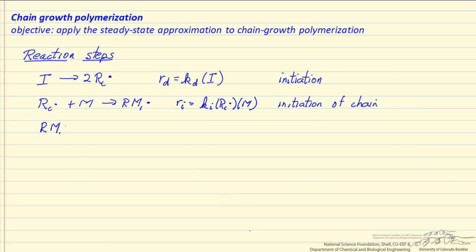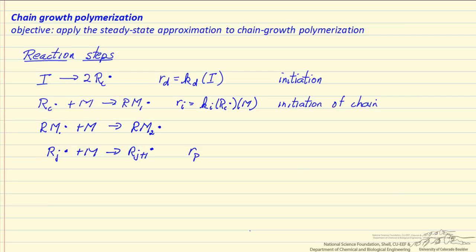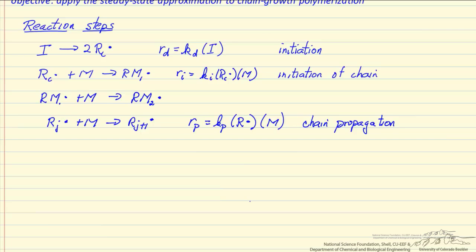This active center will continue to react with monomers to make longer chains. In general, r sub j, where j is the number of monomers, reacts with a monomer to make r sub j plus 1. This is still active — this is propagation. The rate of propagation is the propagation rate constant times the concentration of all active centers times the monomer concentration.